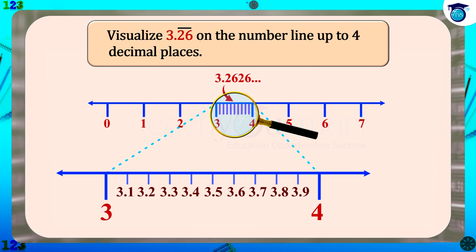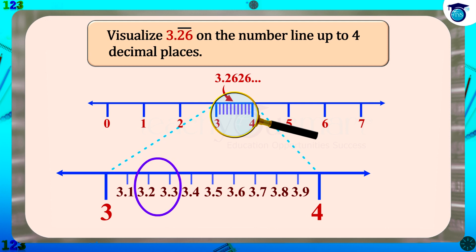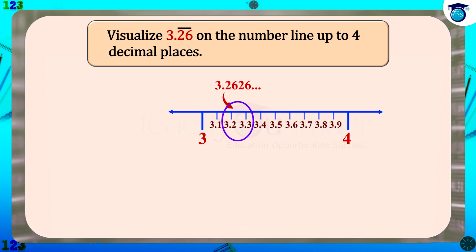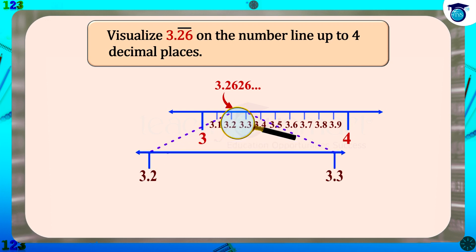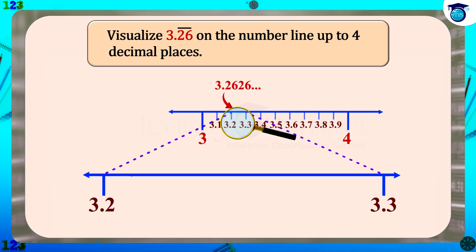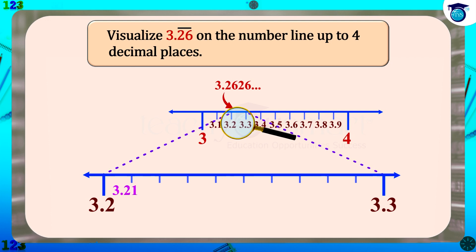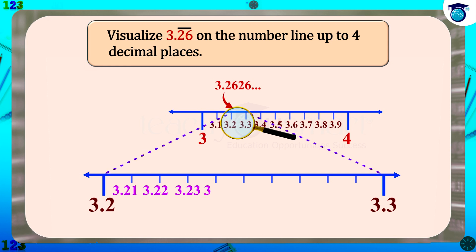Since 3.26 lies between 3.2 and 3.3, divide the distance between 3.2 and 3.3 into 10 equal parts, and mark each part as 3.21, 3.22, etc. to 3.29.